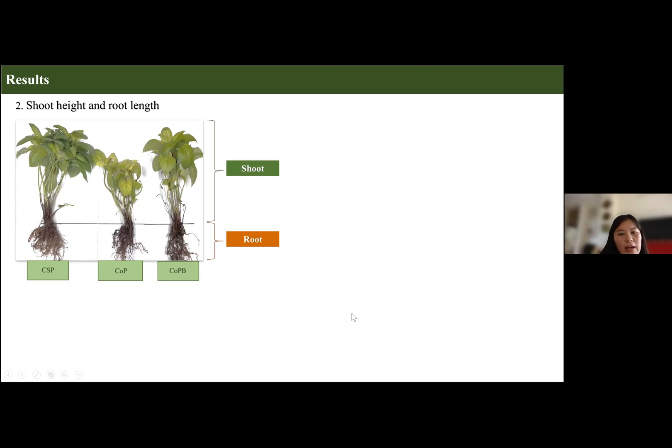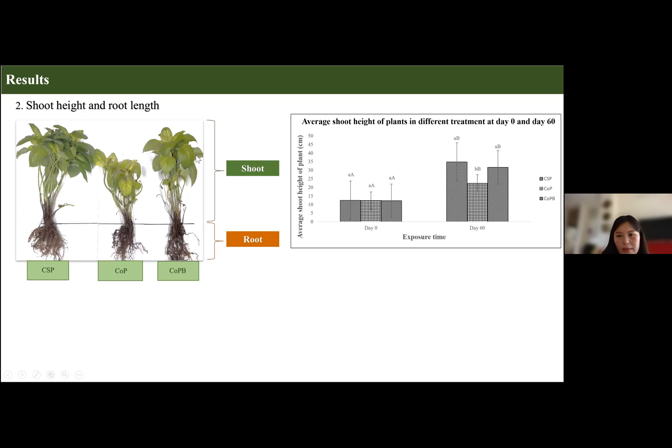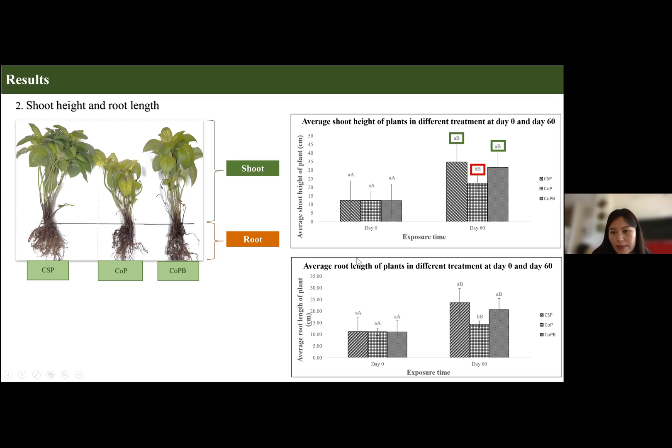Moving on to shoot height and shoot length, we can see from the graph that plants grown in clean soil had the highest shoot height, followed by plants grown in contaminated soil in the presence of bacteria. The lowest root length was recorded for plants grown in contaminated soil alone without the bacteria.